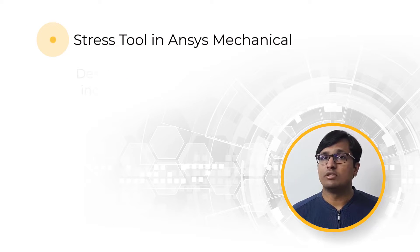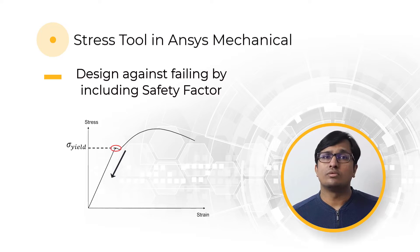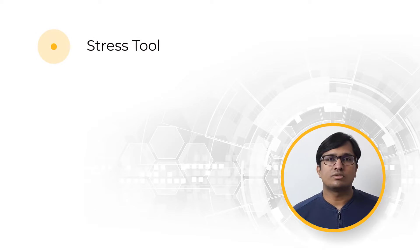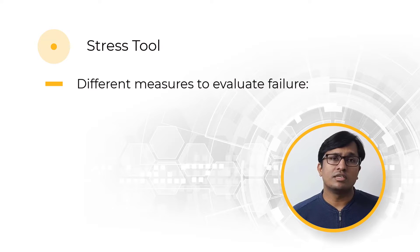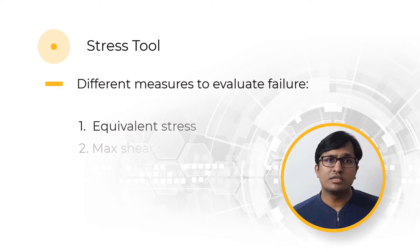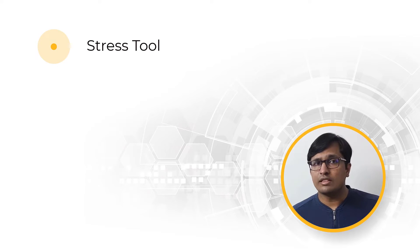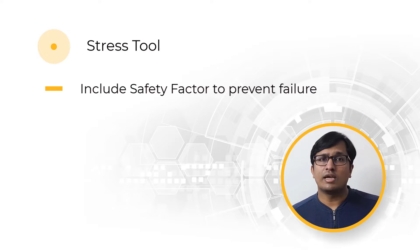There is also a stress tool available. If you don't want the material to yield or fail in the simulation, you are designing against such situations by including a safety factor calculation available in the stress tool. In this video, we will discuss the stress tool and not the non-linear analysis. The stress tool provides four different scalar measures of stress for us to evaluate if the material reaches failure in our simulation. These four stress measures are equivalent stress, max shear, max tensile, and Mohr-Coulomb. These four measures are helpful from brittle to ductile materials. The stress tool calculates the safety factor for the simulation results.